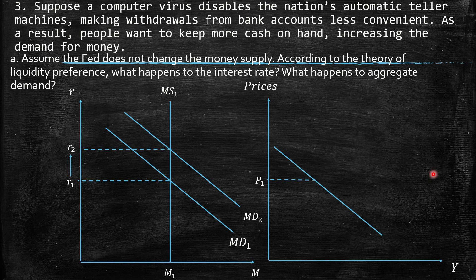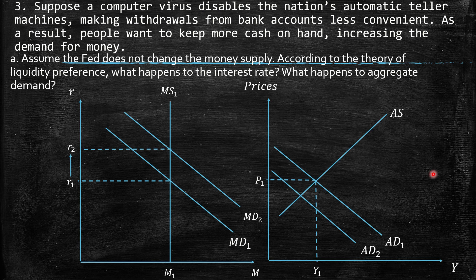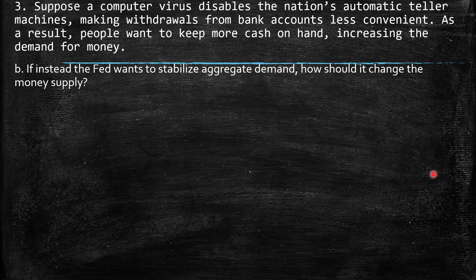Looking at the impact on aggregate demand: the higher interest rate discourages investment. So we have a shift to the left — a decrease in aggregate demand due to higher interest rates.